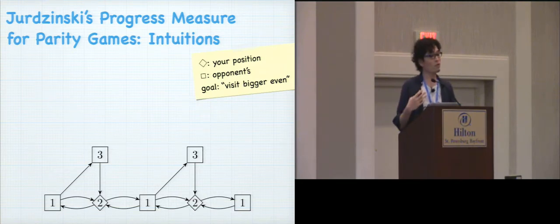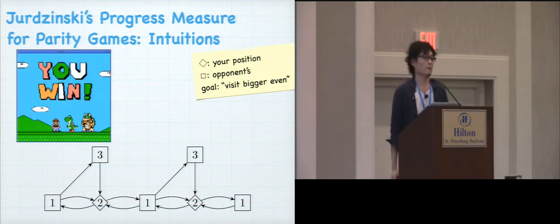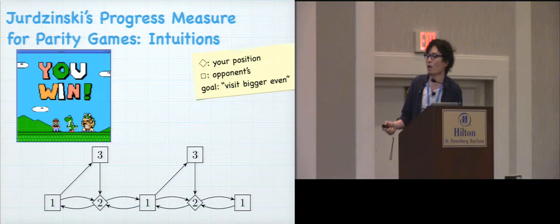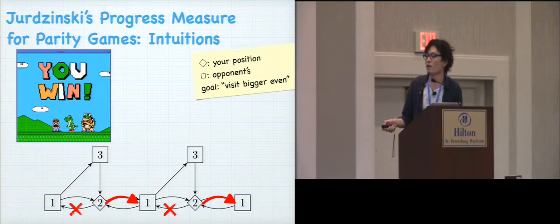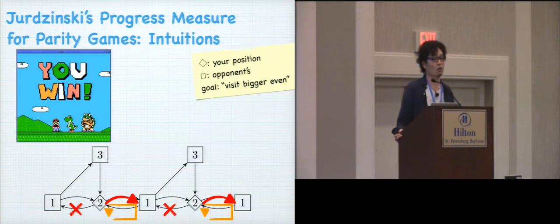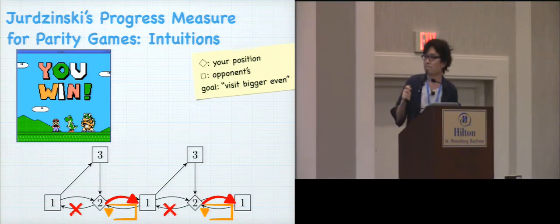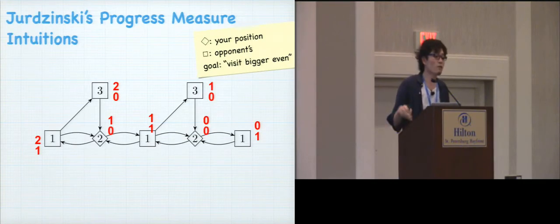And then, so, Jurdzinski's algorithm solves it. But anyway, in this game, you are winning. Because by taking this strategy, you can force the current state to be either in this loop or in this loop. And in any case, you win, because in each of these loops, the greatest priority that you see is two, an even number.